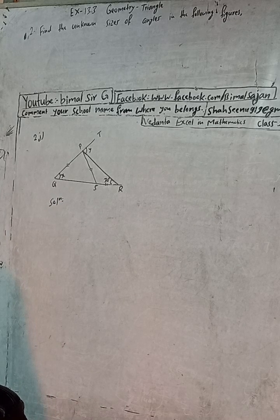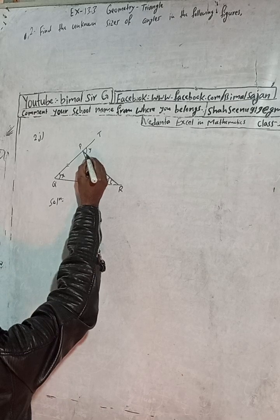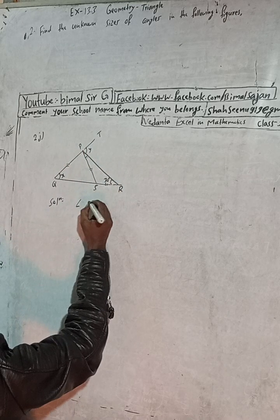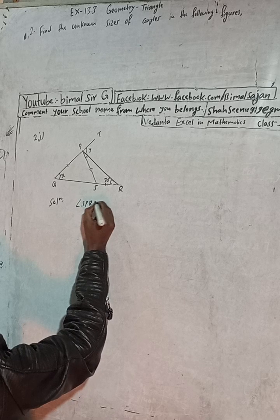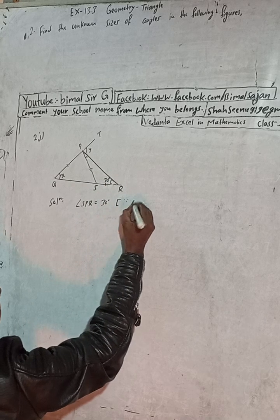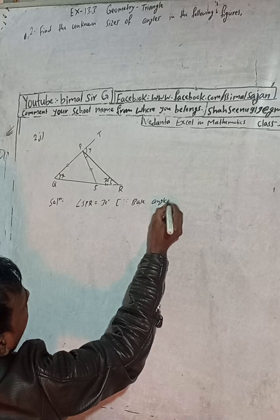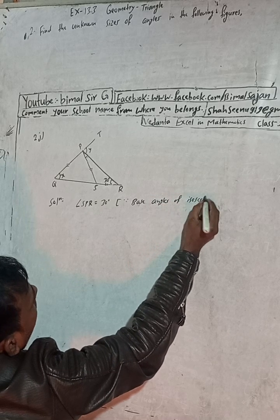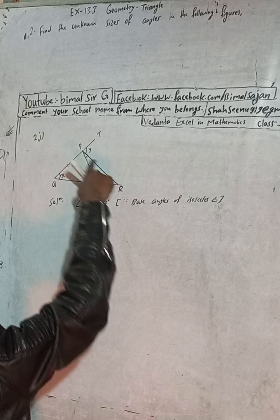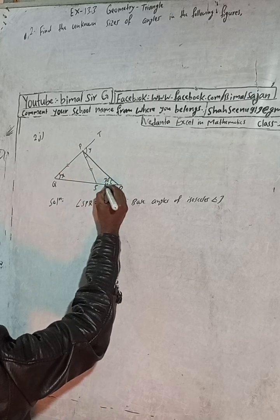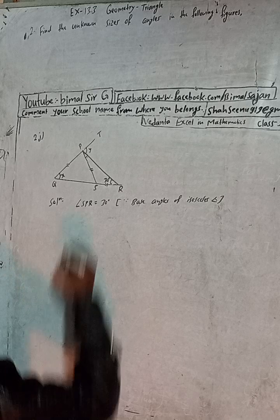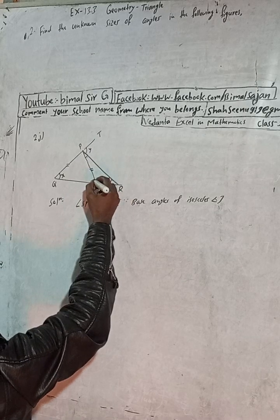Let's begin the solution. In the first step, I will write this angle. The angle name is angle SPR. This angle is equal to 30 degrees. Why? Because the base angles of the isosceles triangle PSR are equal — these two sides are equal, so this angle and this angle, the base angles, are both 30 degrees.